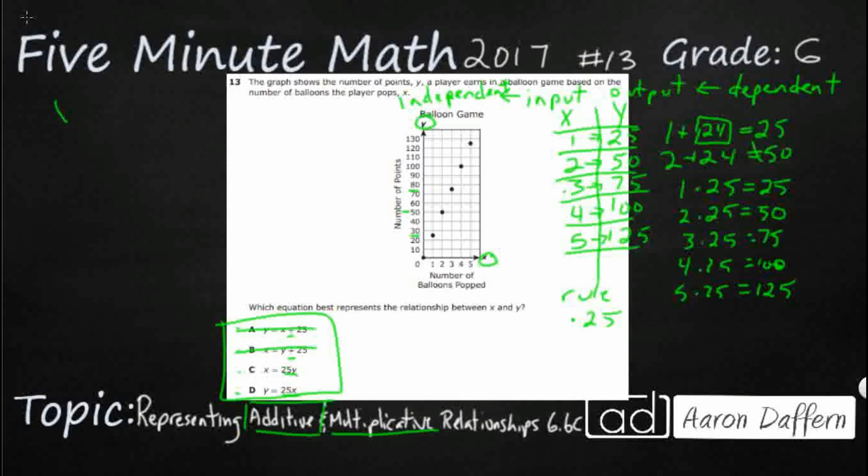So C says X equals 25Y. So I'm just going to take my first X, which is 1, and my first Y, which is 25. I'm going to put a parenthesis here because that's another way to show multiplication. 1 equals 25 times 25. That is not the case, so let's hope it's D.